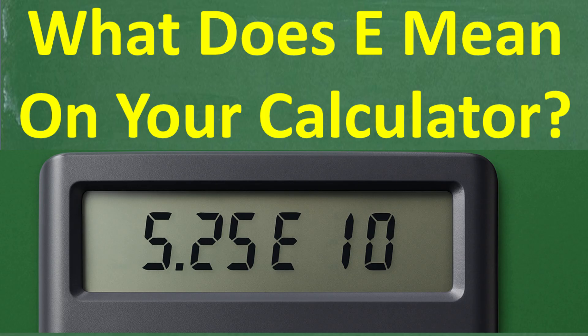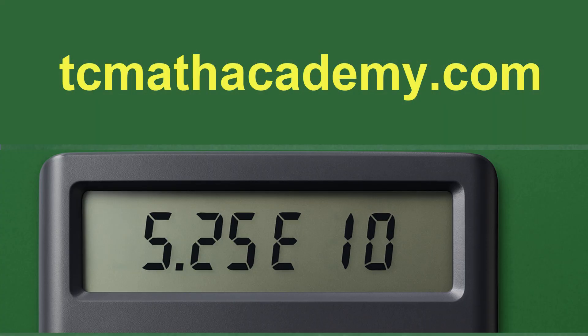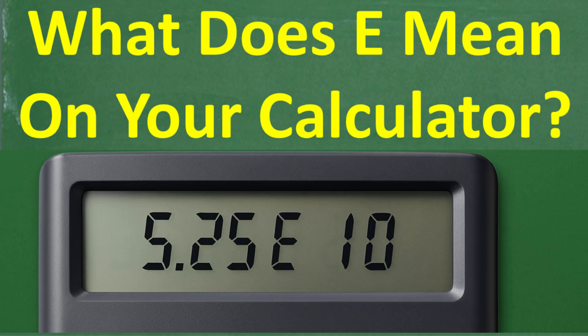You'll see this E and you're like, 'I have no idea what that is.' Some of you might know exactly what it is — if so, put your answer in the comment section. All calculators have a limit on how many digits they can show, which is why this comes up. Also, if you need math help with your course, test prep, or homeschooling, check out my math help program at tcmathacademy.com. If this video helps you out, don't forget to like and subscribe.